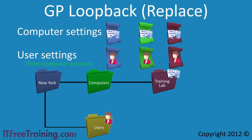Once the computer side of group policy has been applied, the next step is to apply the user side. Normally this would be done based on where the user account is located in Active Directory. When loopback replace mode is configured, the user side of group policy is obtained from the location of where the computer account is located. Essentially, loopback processing in replace mode gives the same result as having the user and computer account in the same location in Active Directory, meaning the user's own group policy settings are ignored and the administrator is free to apply their own user settings.